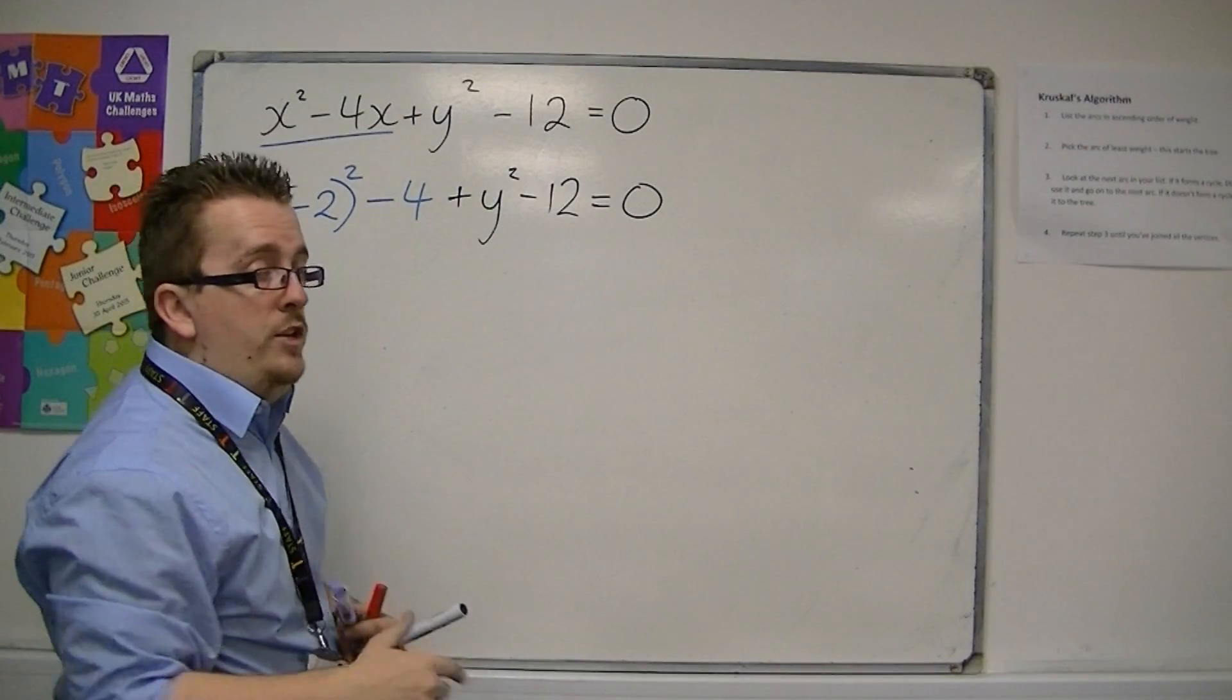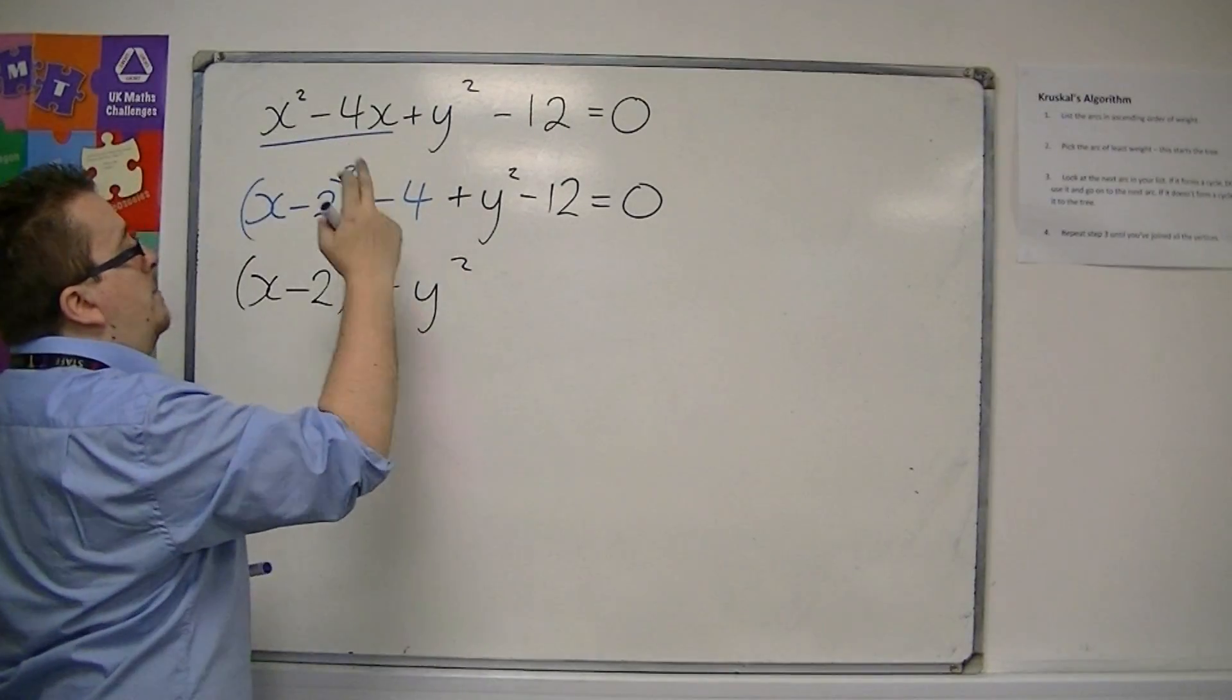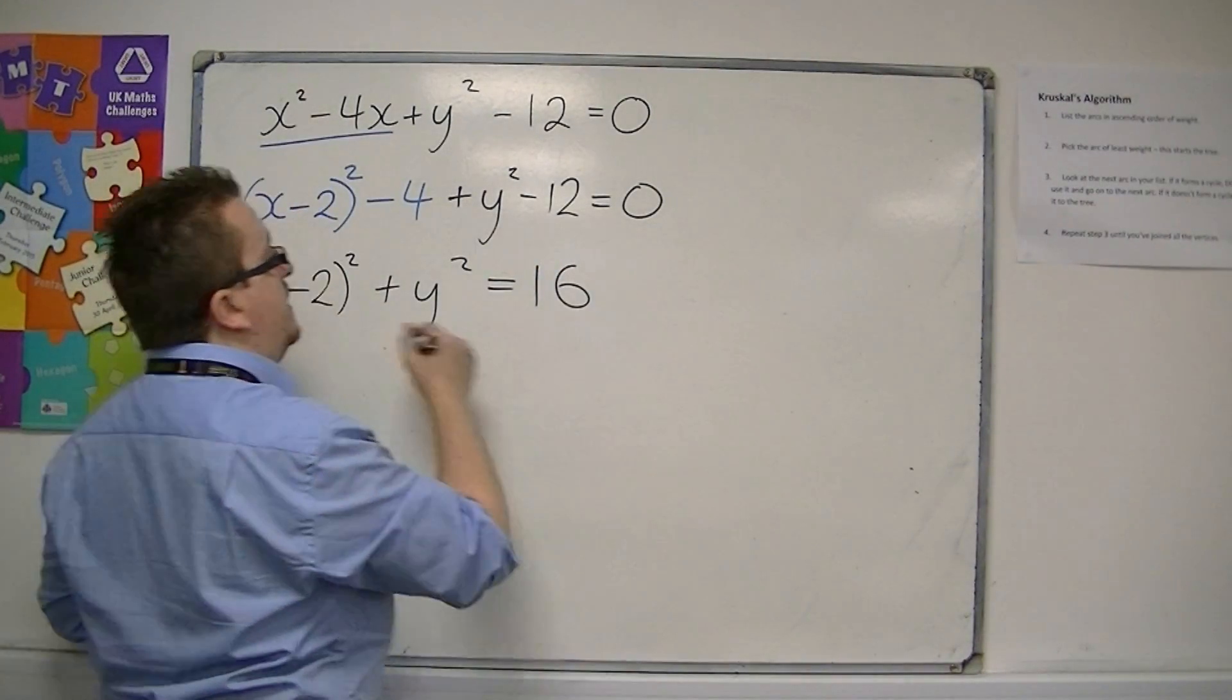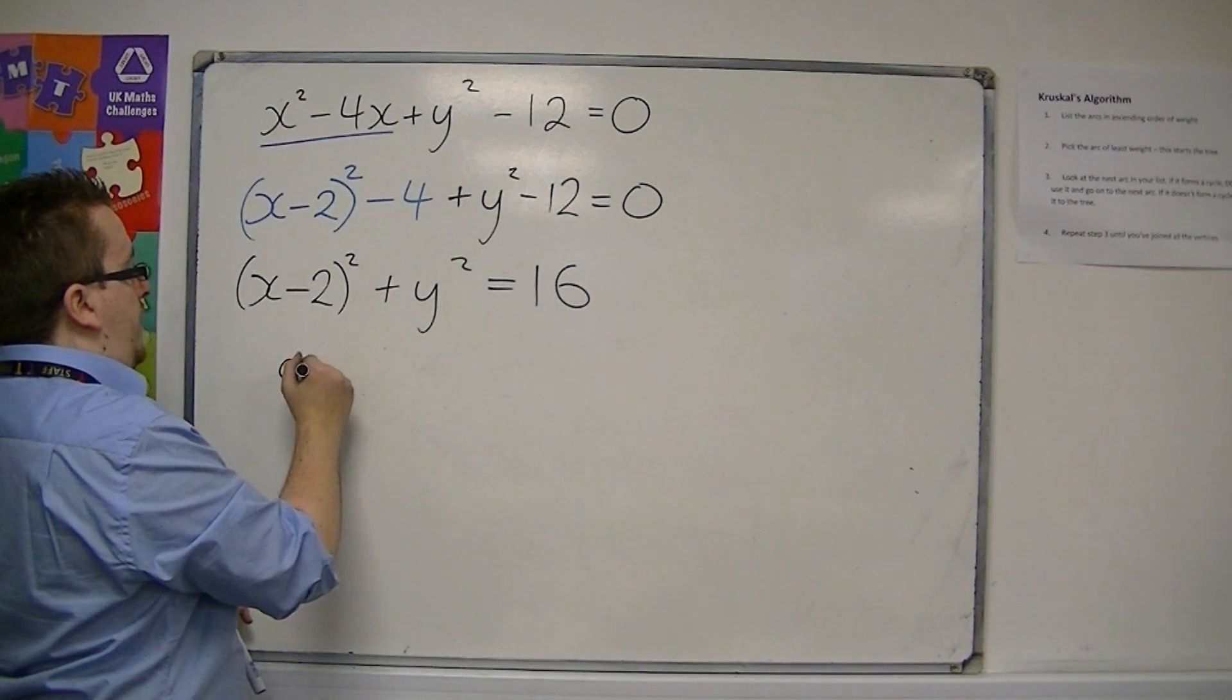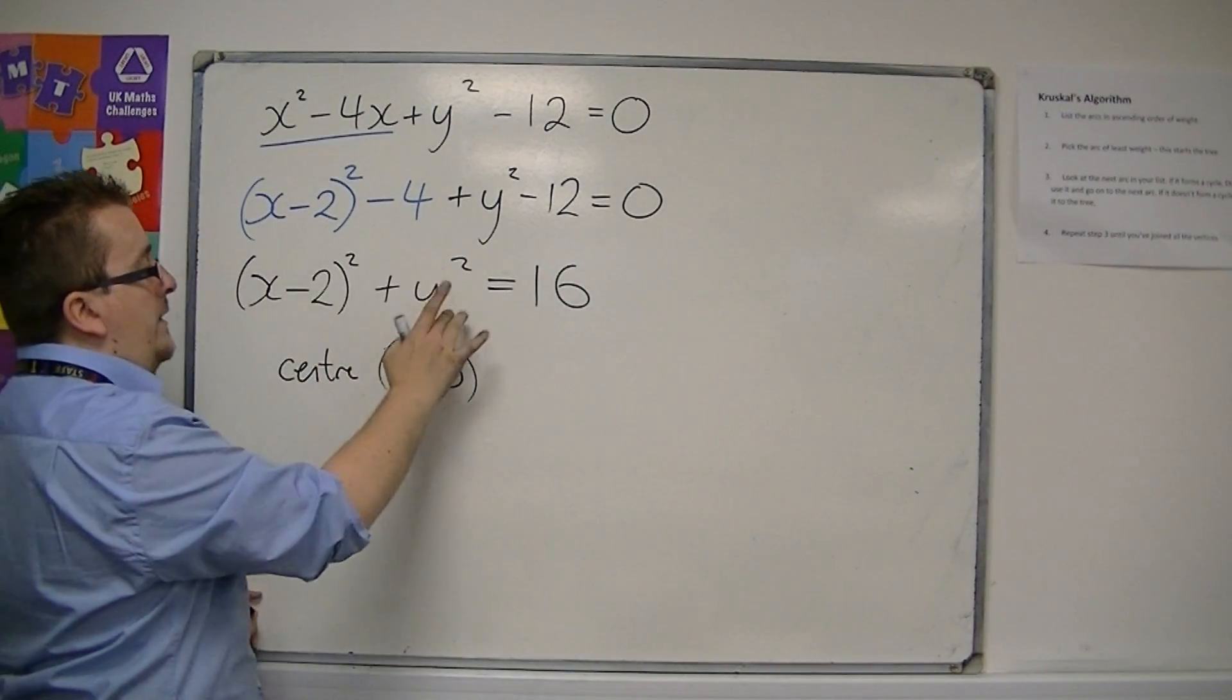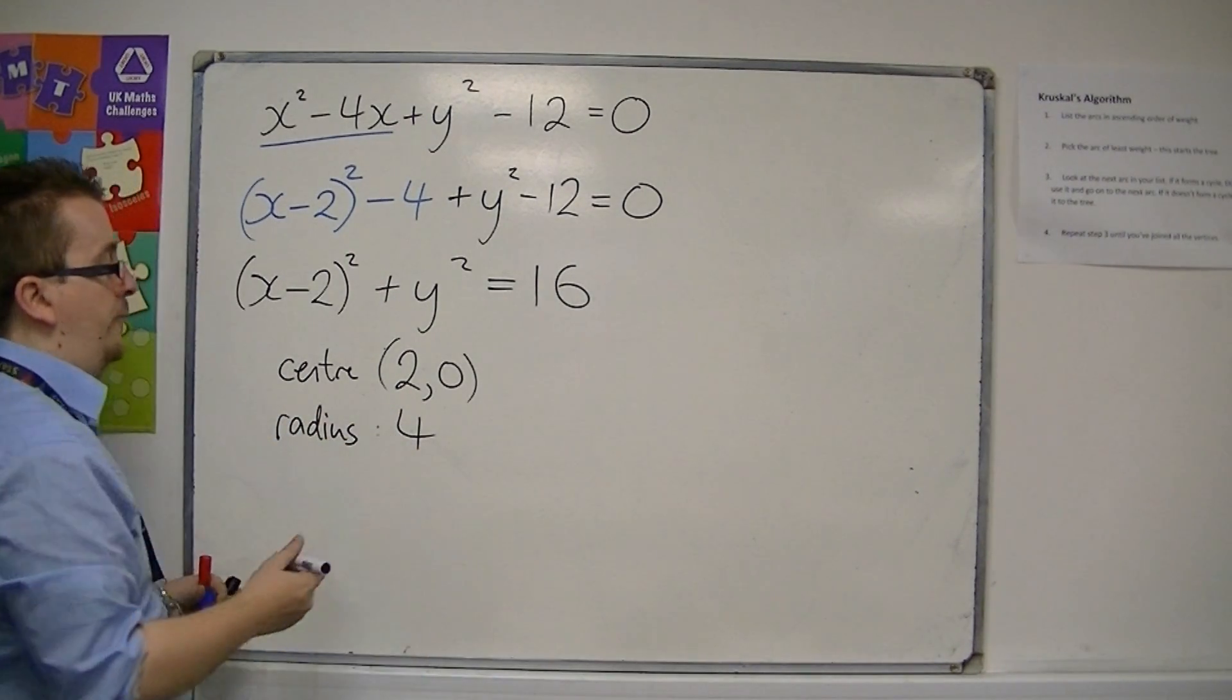Now, if we've rearranged that, we can add the x minus 2 all squared, we've got the y squared, and minus 4 take away 12 is minus 16. And so if we add 16 to both sides, we can write the equation like this. And this equation has a centre at 2, 0. So 2 and 0. And the radius has a length square root of 16 is 4.